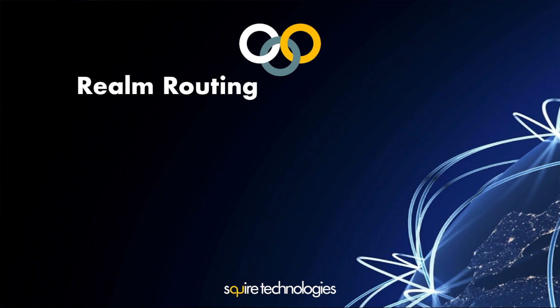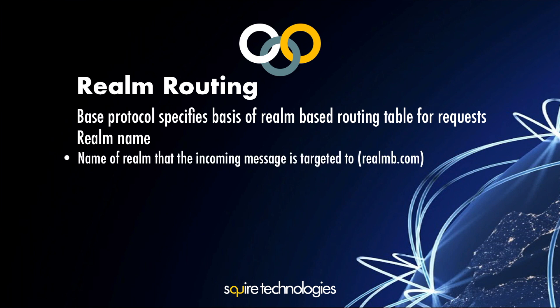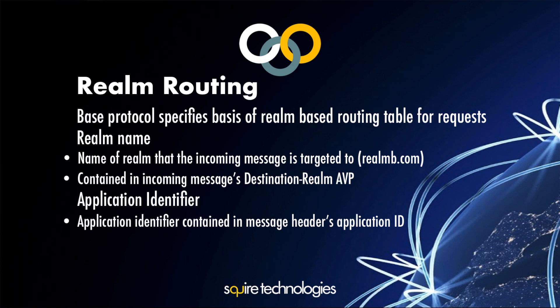The base protocol specifies realm-based routing tables for requests. The routing table contains the realm name — the name of the realm targeted by the incoming message, carried in the destination realm AVP — and the application identifier, indicating which application ID the message is being sent to. These two fields are the only routing criteria defined within the base protocol.